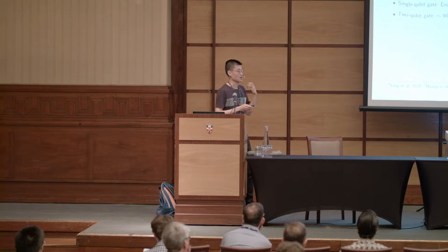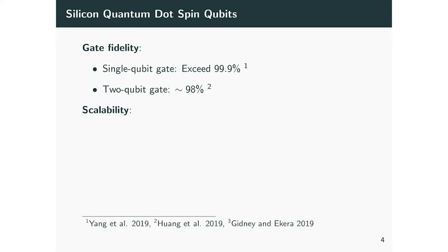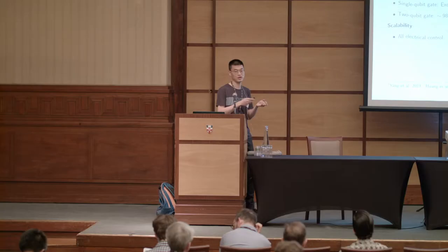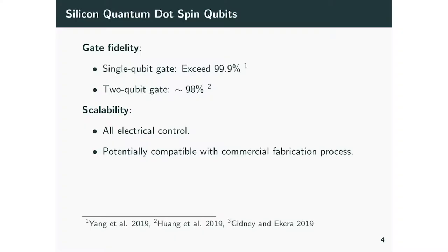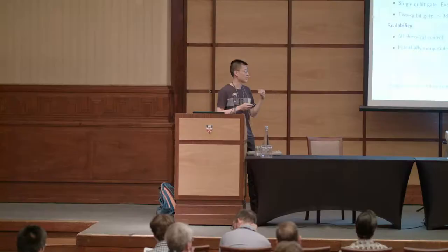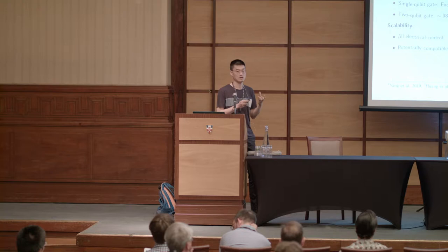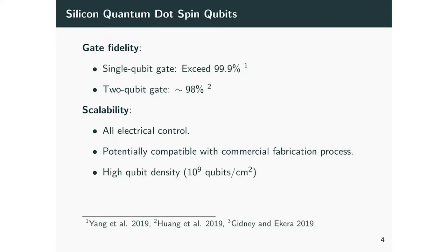The reason we're interested in silicon qubits is, of course, its potential promise in scalability. This is mainly due to the fact that it's all-electrical control, so you can tune and calibrate all those quantum dots and interactions much, much easier — even using feedback and machine learning to calibrate and control them. Second, it's potentially compatible with commercial fabrication processes in the semiconductor industry, meaning that if you can make a small chip very well, the cost and technology to scale it up can be very favorable. Third, it will have very high qubit density — up to 10^9 qubits per square centimeter.